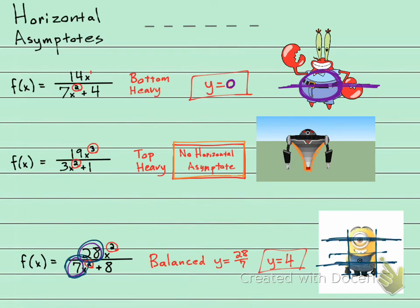So I hope that helps. I like to think of bottom-heavy as zero, Mr. Krabs. Top-heavy, you look down here, you've got no asymptote if you're top-heavy. And then if you're balanced, it could be anywhere.